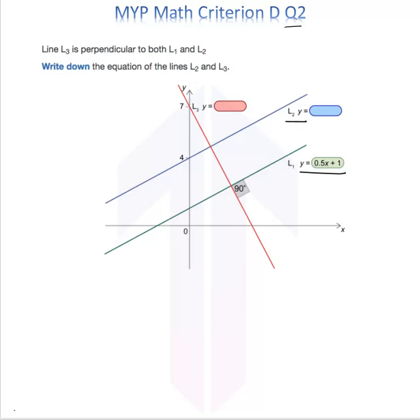We can see that line L2 is parallel to line L1, so the slope of L2 has to be the same as L1, which is 0.5. And the y-intercept C is 4, where it intersects the y-axis.